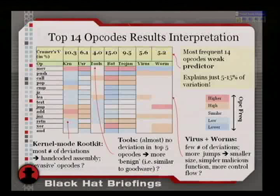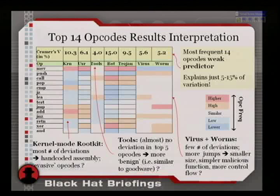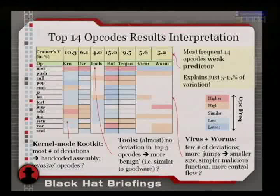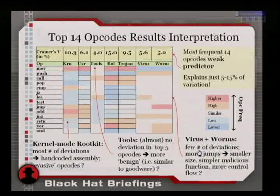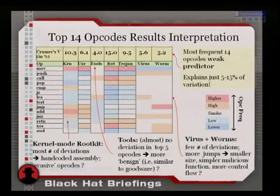So this is not a very good predictor. The top 14 opcodes — the most common ones — are not a good predictor for determining whether a piece of software belongs to goodware or any of the malware families. I have a few hypotheses why, though people with more knowledge can probably figure out better reasons.